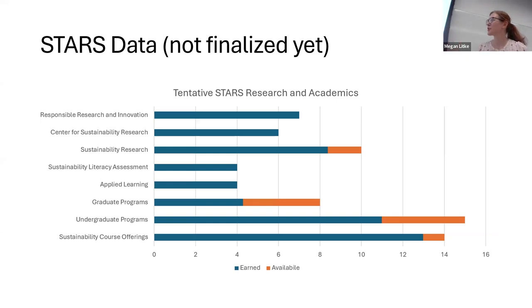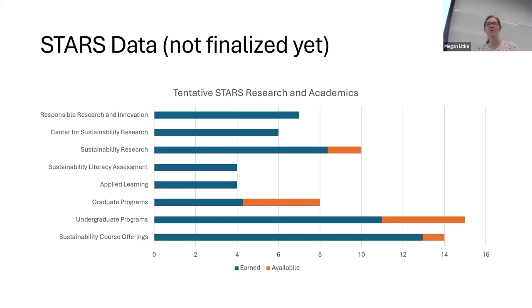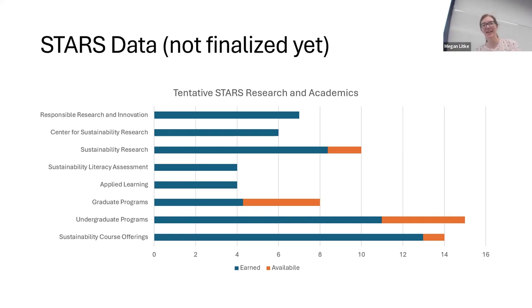We have pretty solid scores in the academics area. Our biggest opportunities are around having outcomes for majors specific to sustainability, but in terms of course offerings, only a handful of departments don't offer at least one class in sustainability. Our students have a lot of opportunity to connect sustainability to different things, and we want to make sure all students have that opportunity regardless of their major.